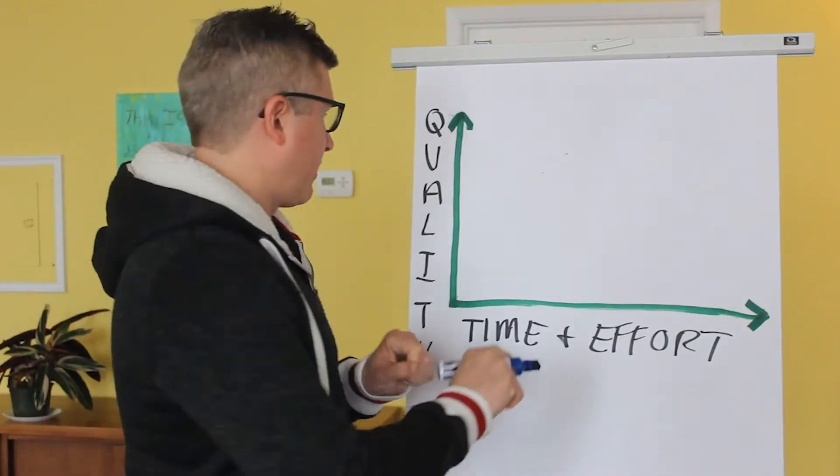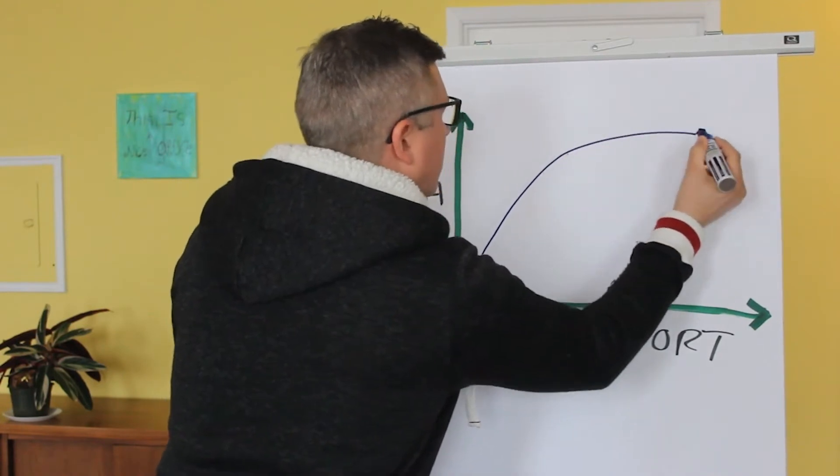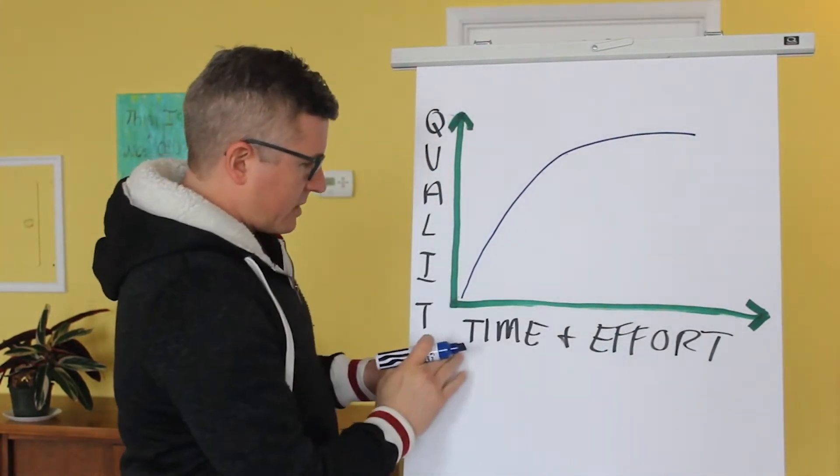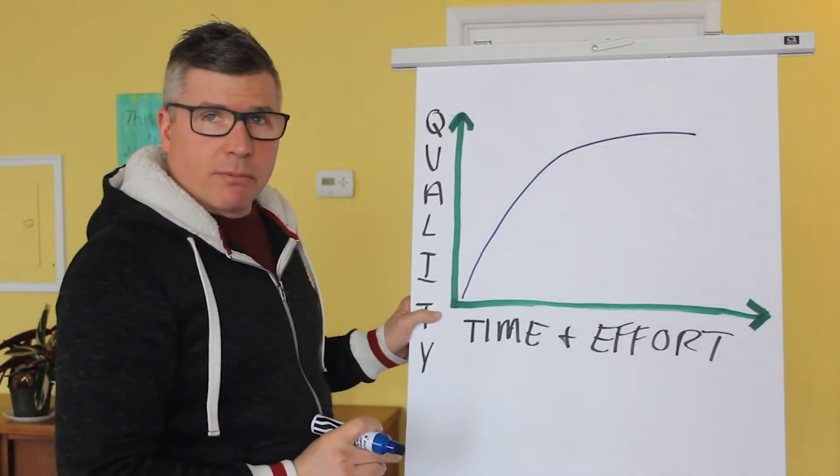So let's go to the graphic here. If we've got this curve where we're showing this is all of your effort to create perfection, and it takes all this time and effort to get there, and this is the quality of your work that you're actually producing.